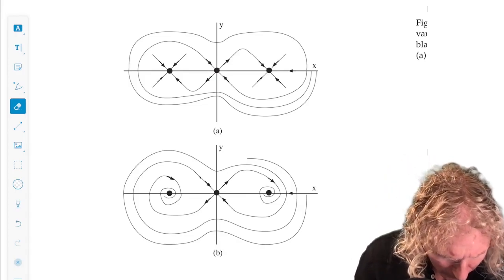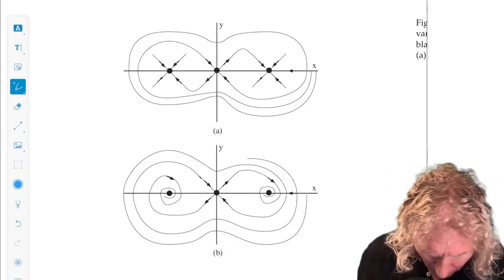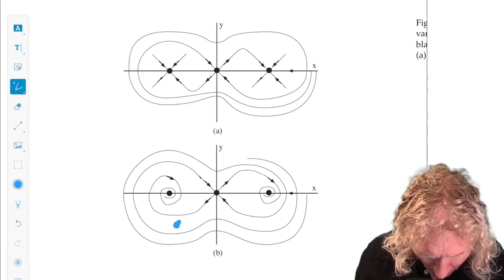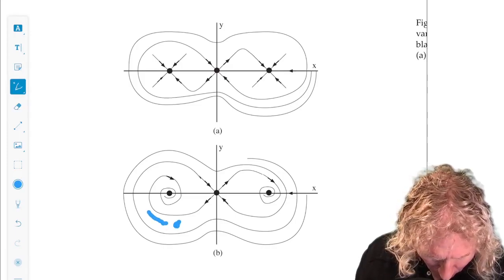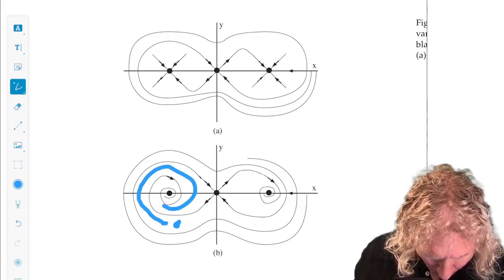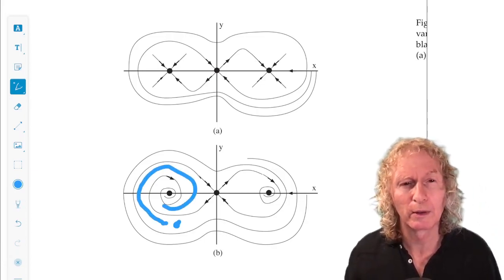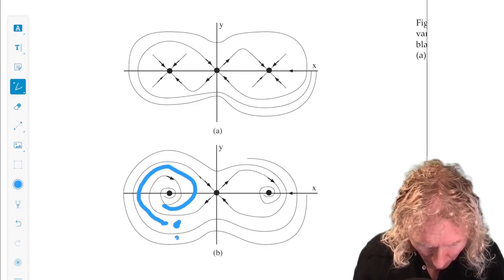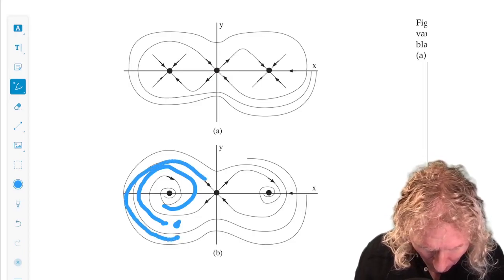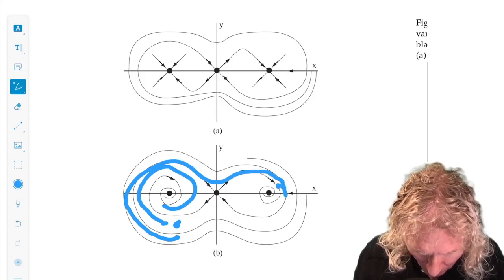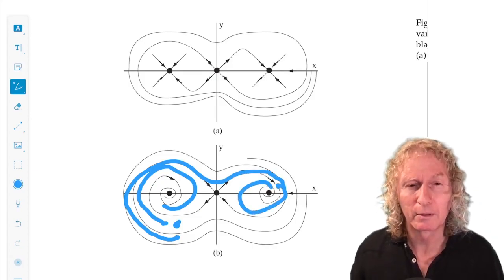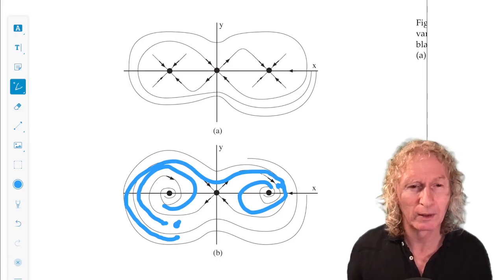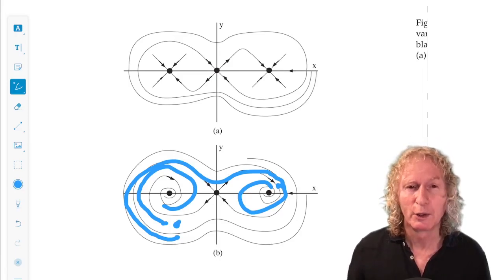So if you start in this region, where do you go? Well, you go into the sink on the right. If you start in the other region, where do you go? You go to the sink on the right. I think the first time I said right, but you mean left. You get the idea.